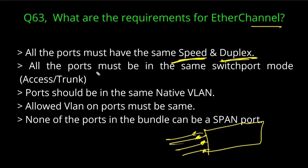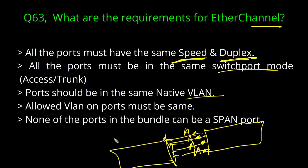Second requirement: all the ports must be in the same switch port mode. Either all ports are access ports or all are trunk ports — the switch port mode must match. Third, ports should be in the same native VLAN. If one switch has native VLAN 1 and the other has native VLAN 2, you cannot configure EtherChannel between them.